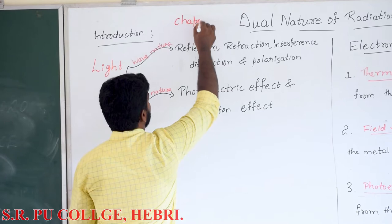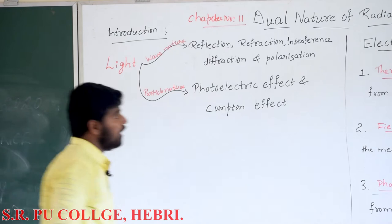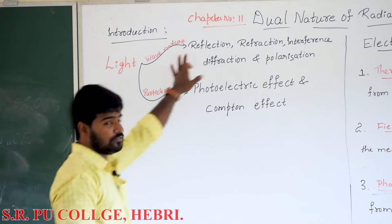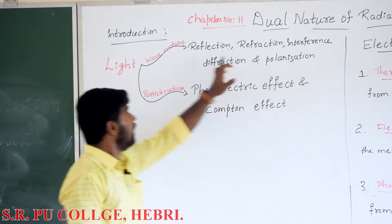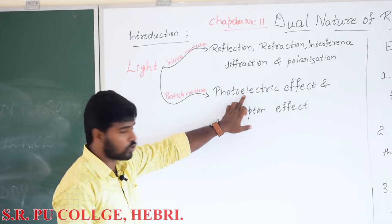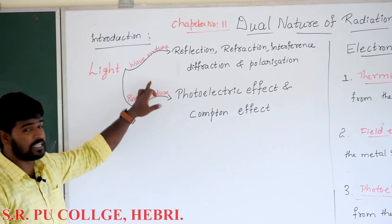Chapter number 11: Dual Nature of Radiation and Matter. From the theory of reflection, refraction, interference, diffraction and polarization, light exhibits wave nature. As well as from the theory of photoelectric effect and the Compton effect, light exhibits particle nature.